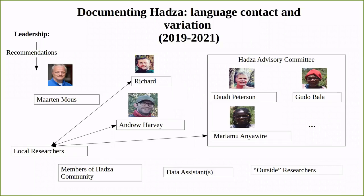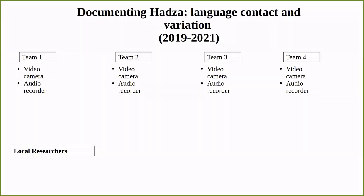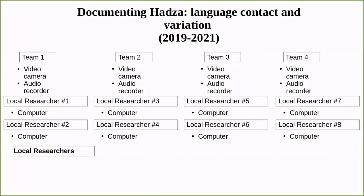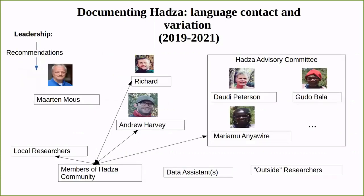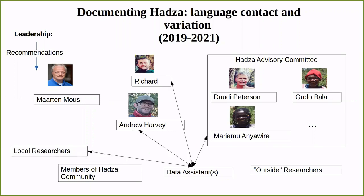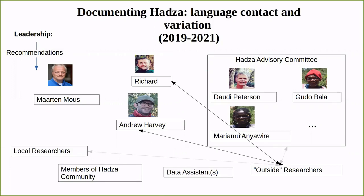We would train eight members of the Hadza community and two members of the Ihanzu community to conduct their own language documentation. The community members filling this role are called local researchers, or LRs for short. The local researchers would be organized into teams of two, each sharing a video camera and an audio recorder. Each individual local researcher would have their own computer for backing up data and creating transcriptions and translations using ELAN. Andrew and I, as well as the local researchers and the advisory committee, would work with members of the community to create documentary materials and request feedback on our progress. We'd also work with one or more data assistants, preparing data and metadata for archiving.